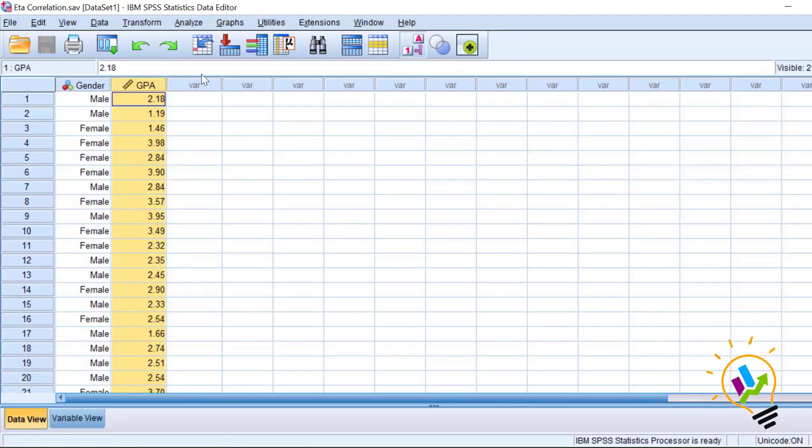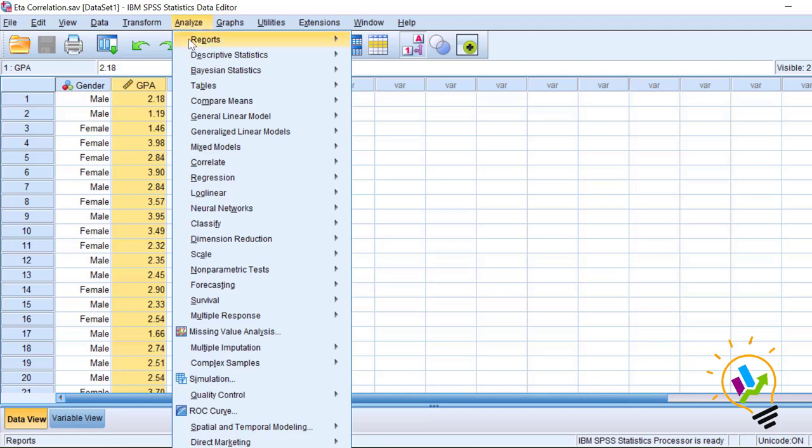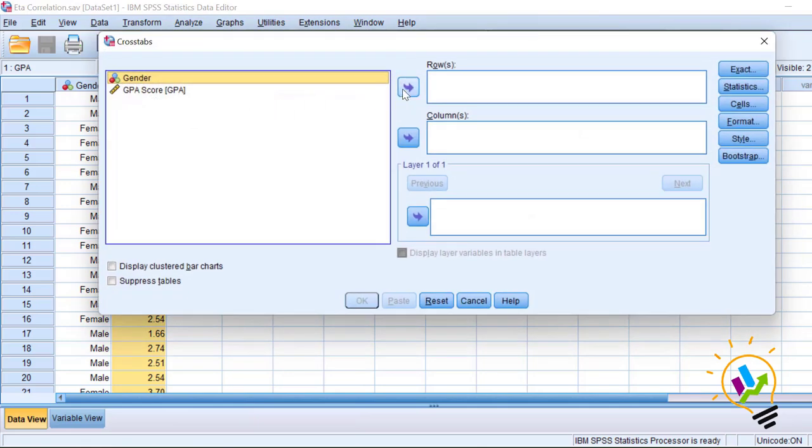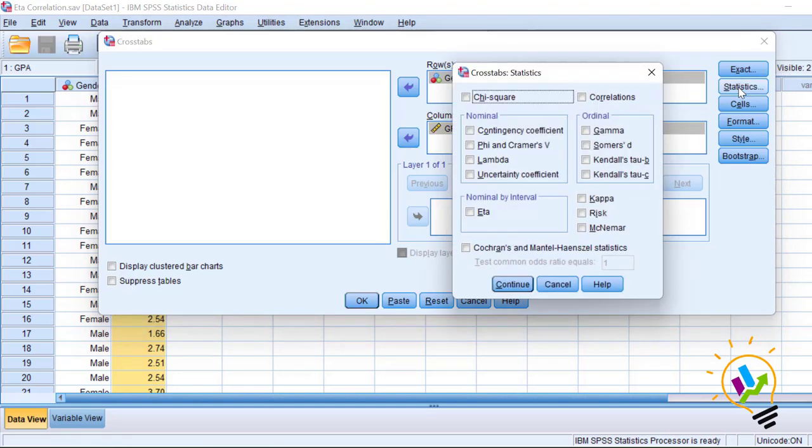In this analysis, first click Analyze, Descriptive Statistics, Crosstabs. Put gender as a row and GPA score as column. Click Statistics and select this eta value because we are going to have a correlation between nominal variable by interval variable. Click Continue and click OK.